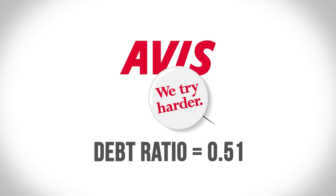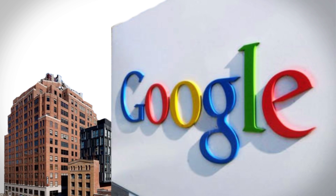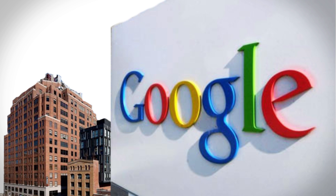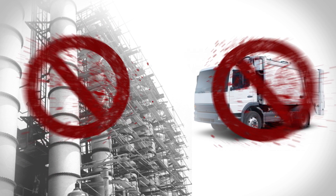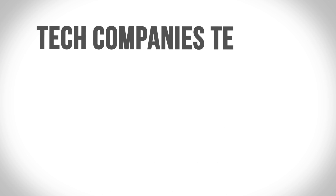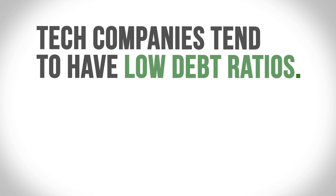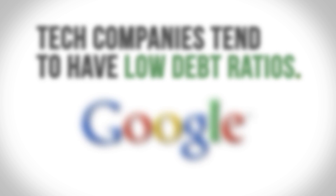Compare that to a technology company like Google. Google does not need a lot of physical assets. They might own some office buildings and desks and computers, but they don't need factories or trucks or pipelines to sell their product. Tech companies tend to have low debt ratios. Google's debt ratio is 0.20.